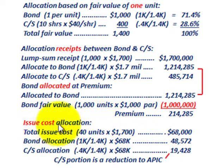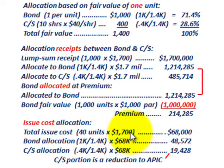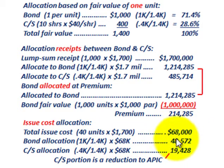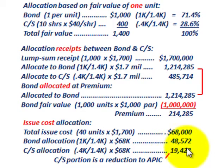We also have to allocate the issue costs. Total issue costs are the 40 units retained by the broker times $1,700 per unit, totaling $68,000. For the bond allocation of issue costs, we take the fractional amount times $68,000, giving $48,572 allocated to the bond. For common stock, the same approach — the fractional amount times $68,000 — gives $19,428 allocated to common stock for issue costs.